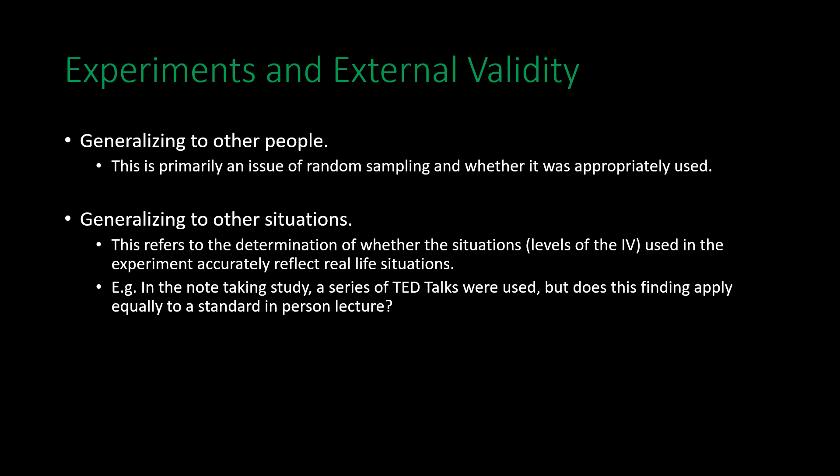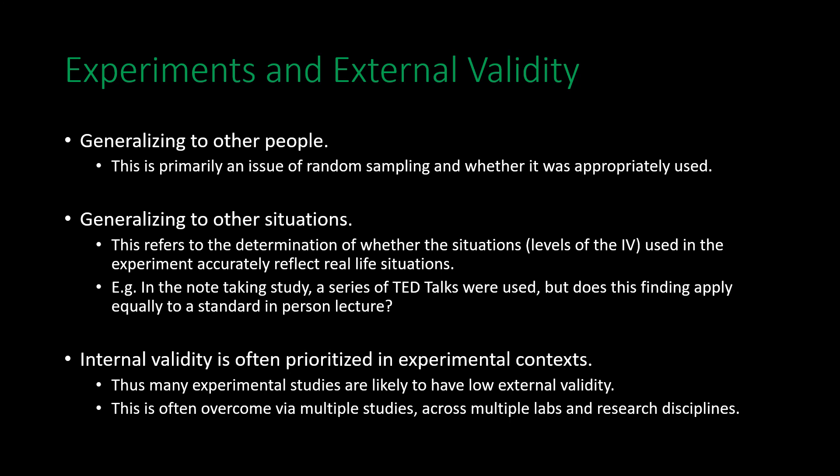It is also important to note that internal validity is often highly prioritized in experimental contexts, and internal validity is negatively related to external validity — the more we control all variables, the less likely we can generalize to other contexts. External validity relating to generalizability to other situations is often addressed by having multiple experiments across different labs and institutions, then pooling the research together to see if similar results are found across multiple domains.